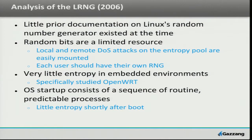The paper also showed there was very little entropy in embedded environments. This was 2006, before most of us had caught the cloud wave. They weren't really looking at virtual machines — the equivalent back then was embedded environments. Their research showed that OpenWRT, a Linux distribution run on embedded routers, was very vulnerable to attacks on the entropy pool. Those devices don't have a keyboard or mouse, used a static seed at every single boot, and they showed how easy it was to cause collisions on OpenWRT routers.